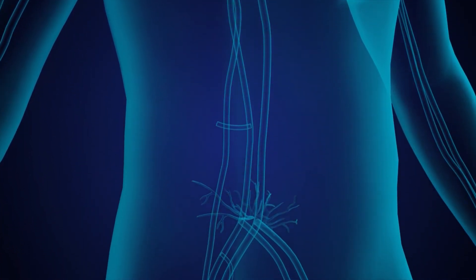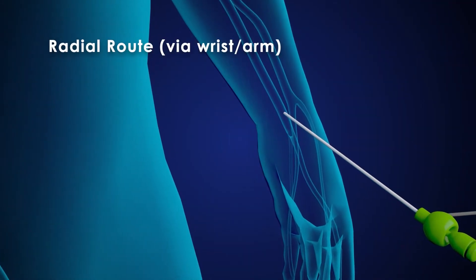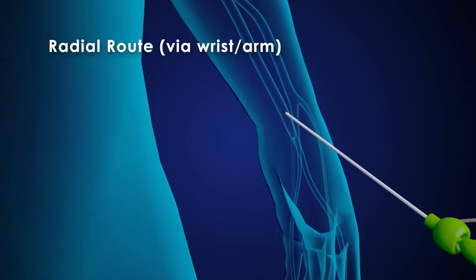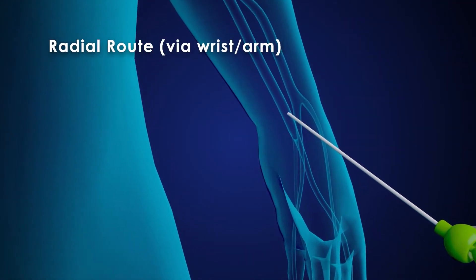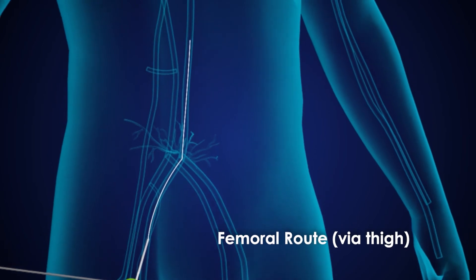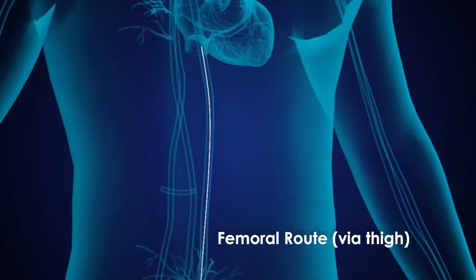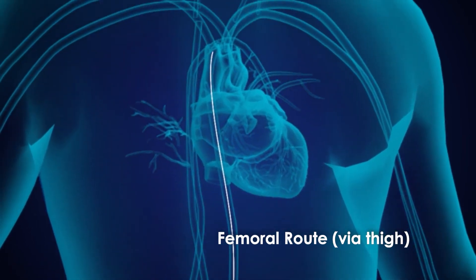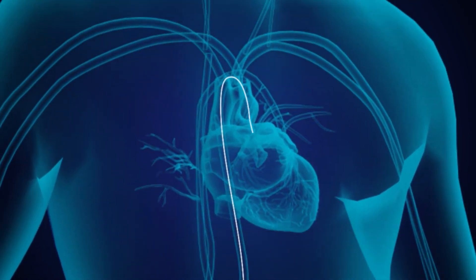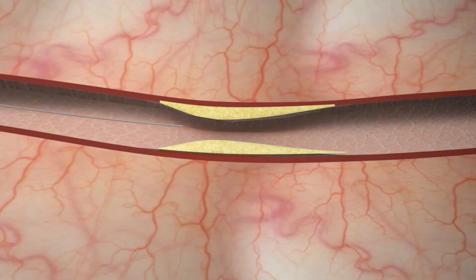During this procedure, first a guide wire is passed through the radial or femoral route up to the opening of the coronary arteries, called the coronary ostium. A flexible catheter called a guide catheter is then railed over the guide wire up to the opening of the coronary artery.